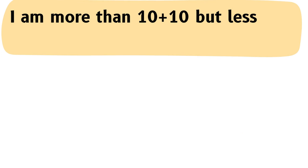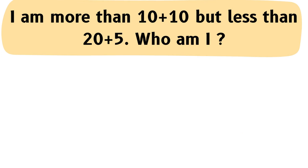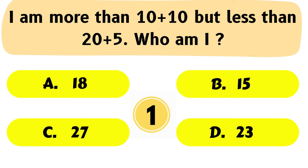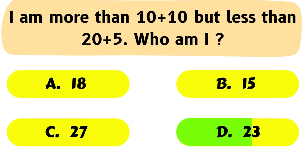Question No. 42: I am more than 10 plus 10 but less than 20 plus 5. Who am I? The correct answer is Option D: 23.